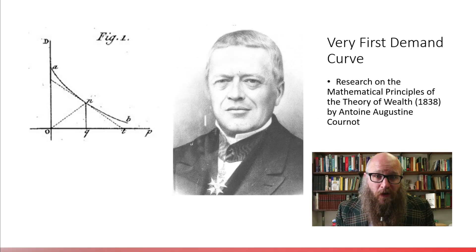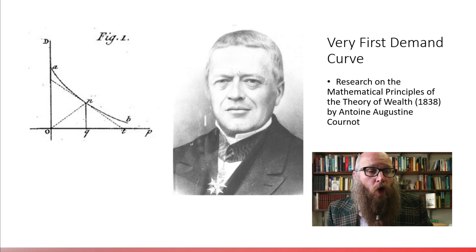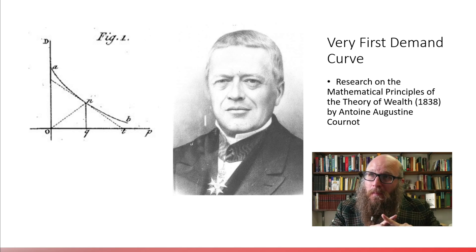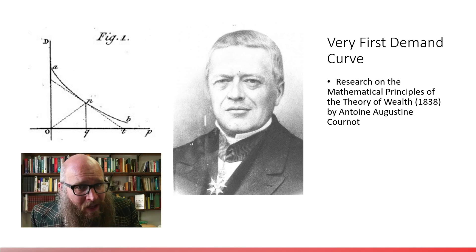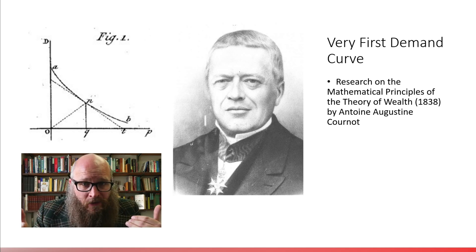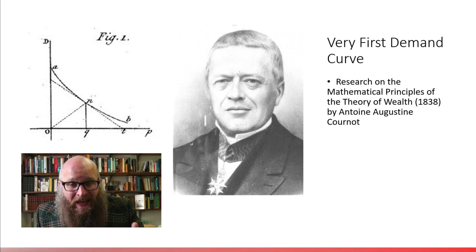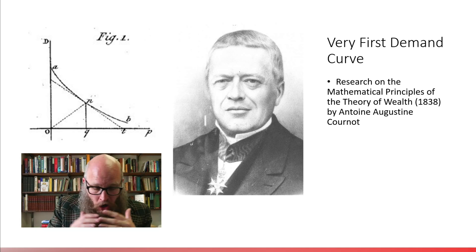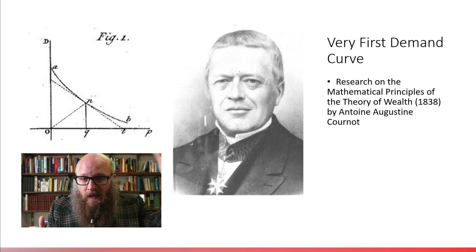The very first demand curve put down in print was done by the French mathematician Antoine Augustin Cournot in 1838. As a preview, we didn't quite put supply and demand together on the same graph for another few decades. As a piece of trivia, notice what his axes are — P for price is on the horizontal axis and D for quantity demanded is on the vertical axis. There's no strong reason which way is better. The reason today we have quantity on the horizontal and price on the vertical is just convention, going back to 1890 when Alfred Marshall did it that way, and we've all been doing it that way since.